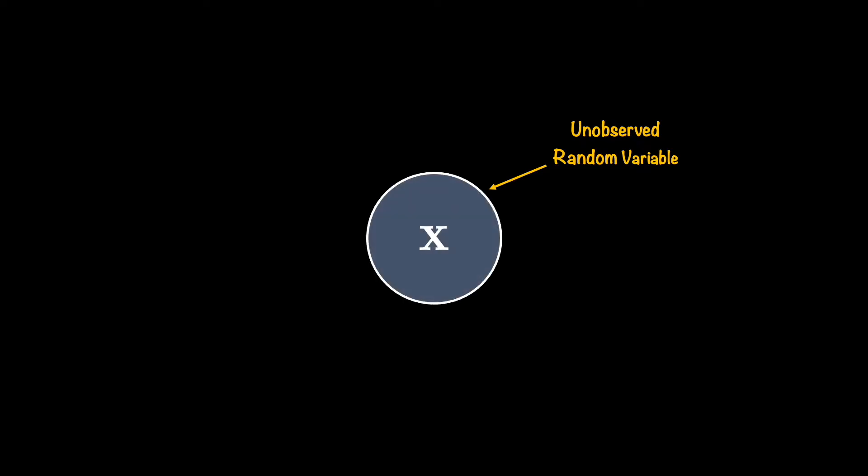I start with our first notation, which is X. If I put a circle around it, it means that X is a random variable — more specifically, an unobserved random variable. If I fill the circle with some color, then it means that X is an observed random variable. In control theory and many other fields, we call an observed random variable the measurement. Essentially, this is what your sensor will give you as its output or a reading.